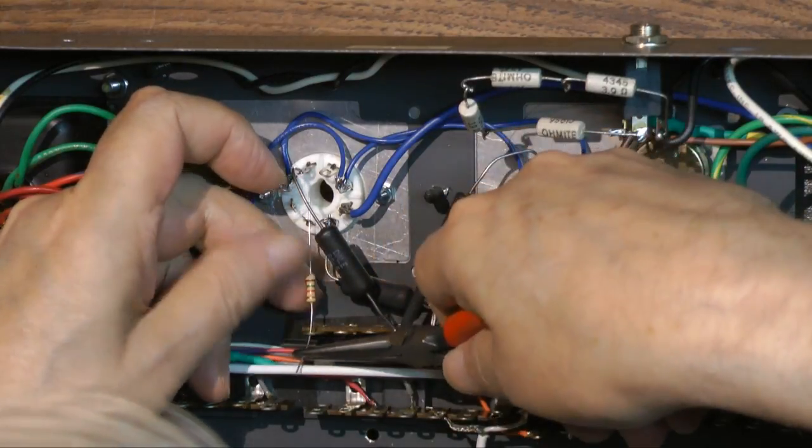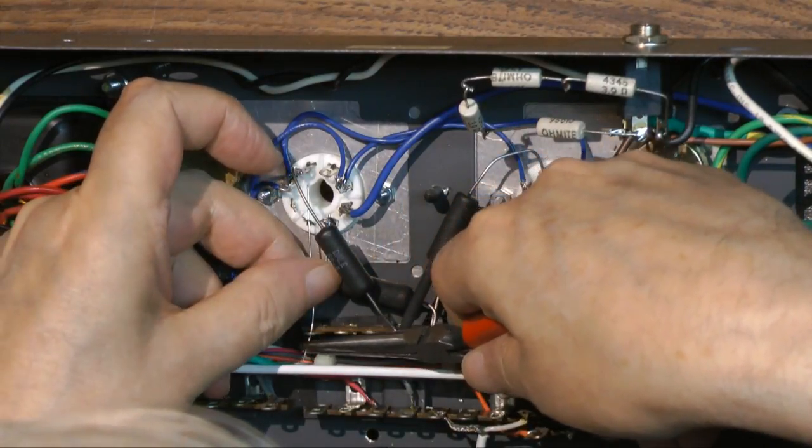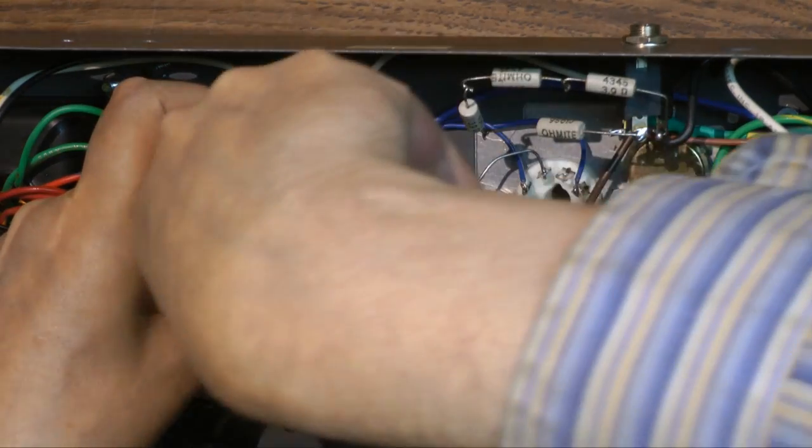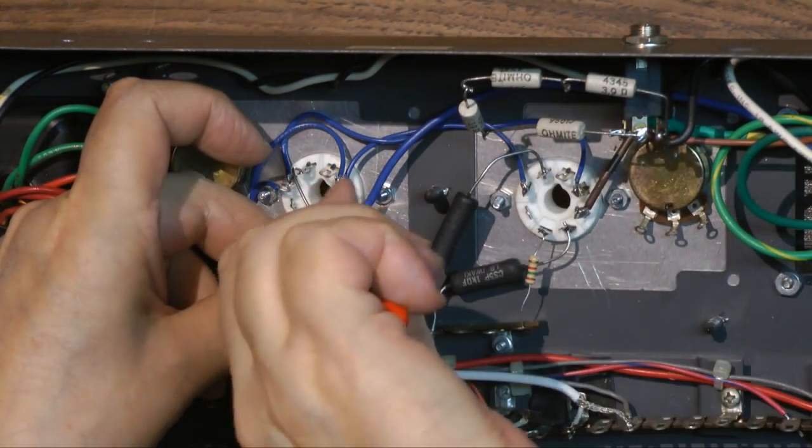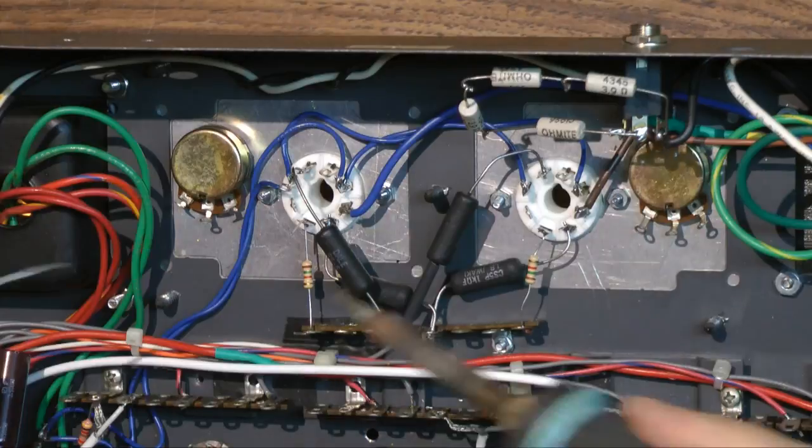These resistors are grid suppressor resistors. They isolate the grid from anything else. They're 1.5K ohm.